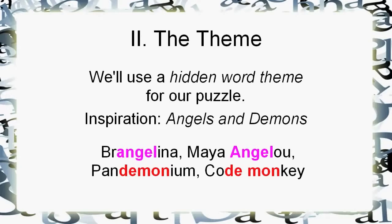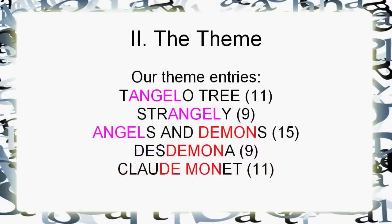Brangelina is a nice, fun entry. Code Monkey is a fun entry. Remember what we need to do: we need to find symmetrical ones, ones that are pretty interesting, and preferably ones that are split across two words. So here's what I'm going to do: Tangelo Tree and Strangely. I'm going to have the defining entry, Angels and Demons, the 15-letter entry, to explain what's going on. Desdemona, from Othello, and Claude Monet — they split up symmetrically.